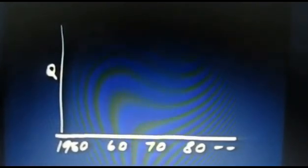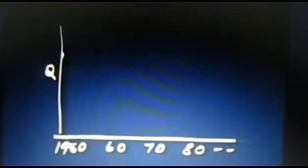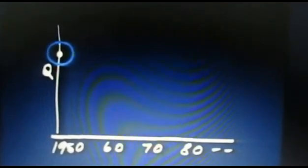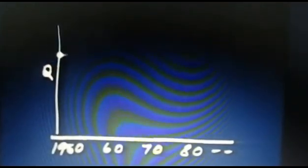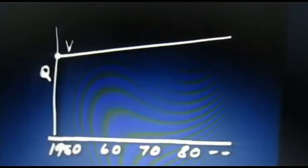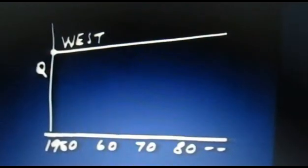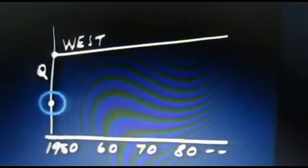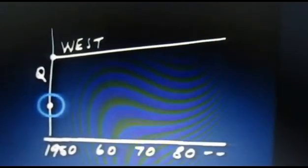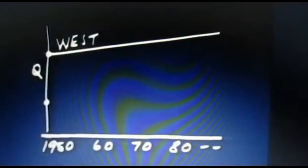In 1950, western quality was high. It has kept improving, but at an evolutionary pace. In 1950, Japanese quality was poor. The Japanese then invested in a massive training program — they learned how to improve quality, then they made quality improvements at a revolutionary pace, year after year.